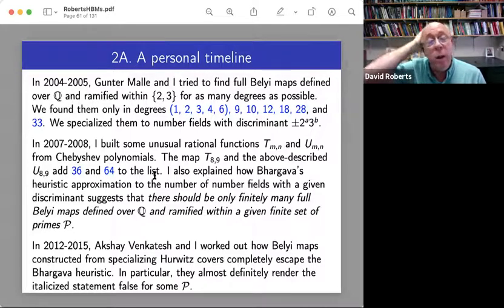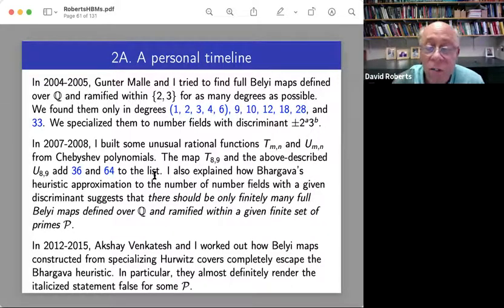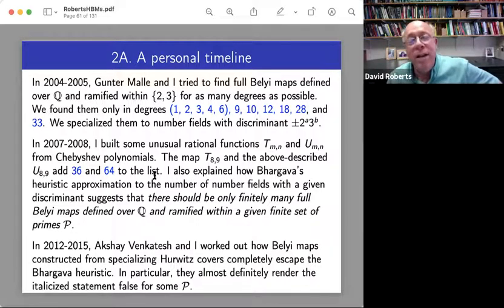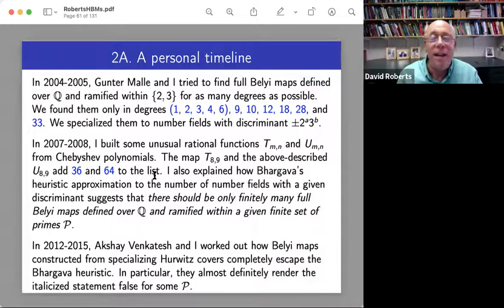But somewhat more seriously. The same year, I realized that Manjul Bhargava's heuristic on the number of number fields with a given discriminant, if you really literally interpret the heuristic as being like a theorem, that would say that there should only be finitely many full Belyi maps.